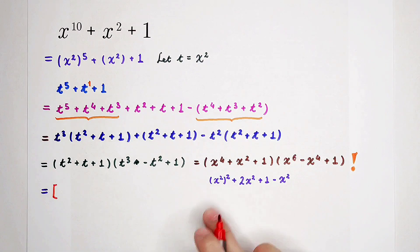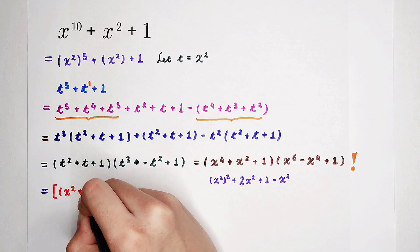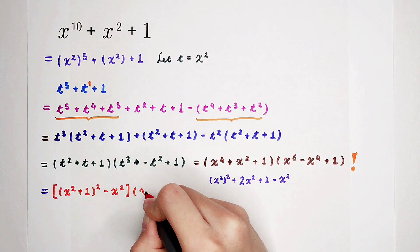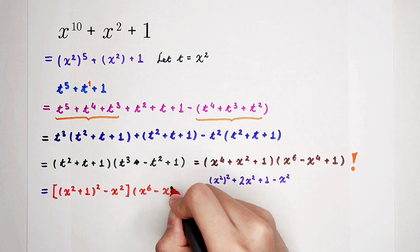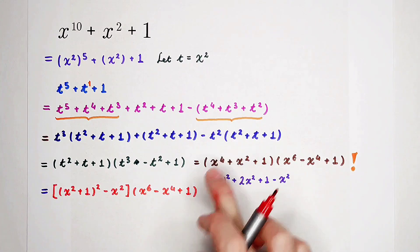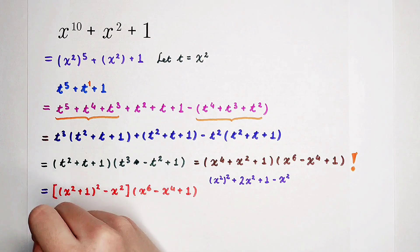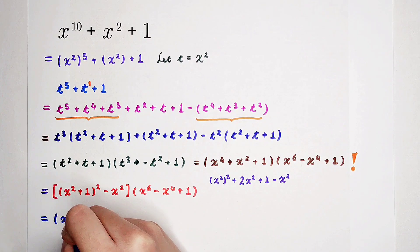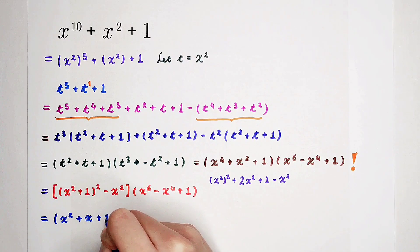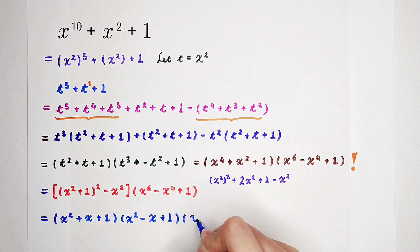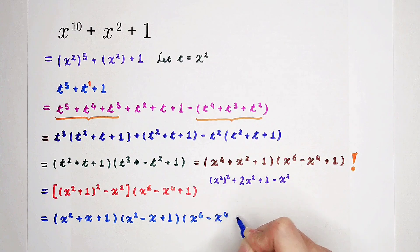So here it can be written as (x squared plus 1) squared minus x squared, and then times (x to the power of 6 minus x to the power of 4 plus 1). Now, using the difference of squares — a squared minus b squared equals (a plus b)(a minus b) — this part factors as (x squared plus x plus 1) times (x squared minus x plus 1). And then times (x to the power of 6 minus x to the power of 4 plus 1). So this is the answer.